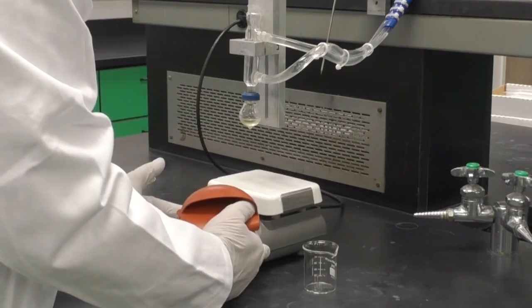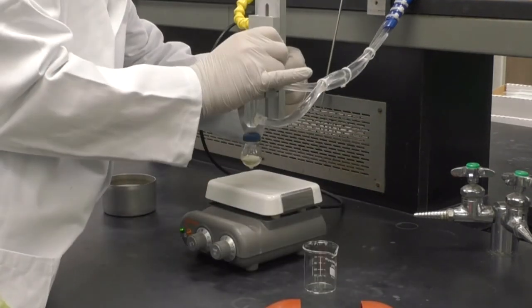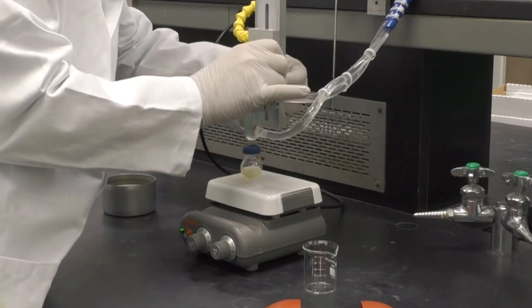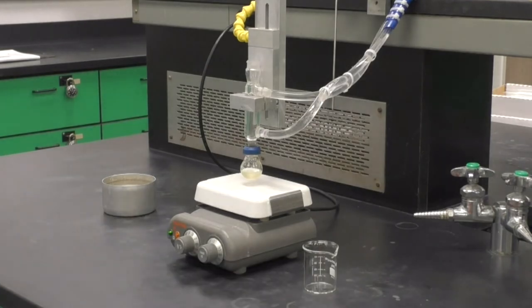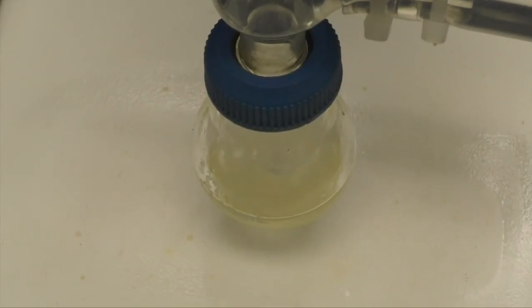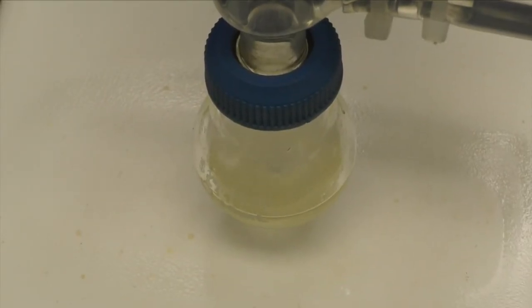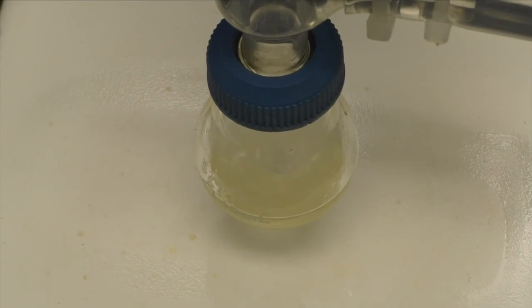Then lower the condenser and flask down to the stirrer hot plate and allow the mixture to cool while rapidly stirring for about 5 to 10 minutes. Make sure you have a good vortex. Your solution should be a little cloudy.